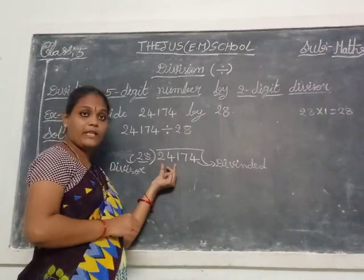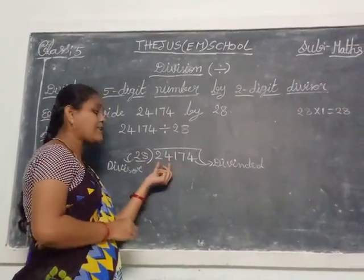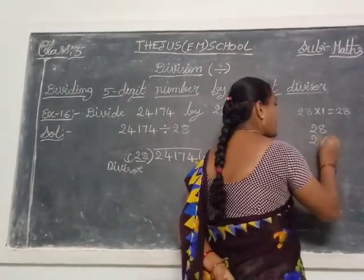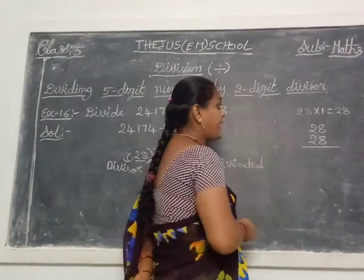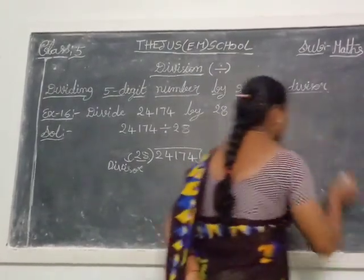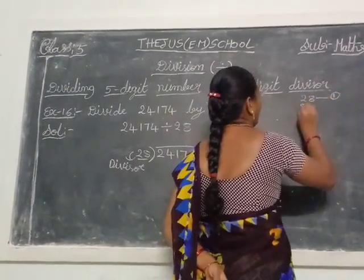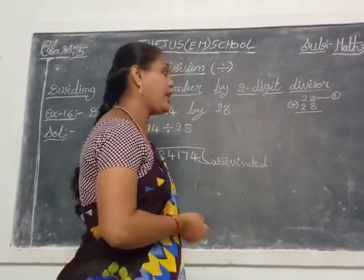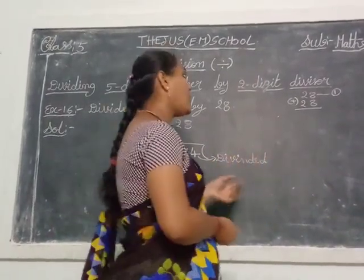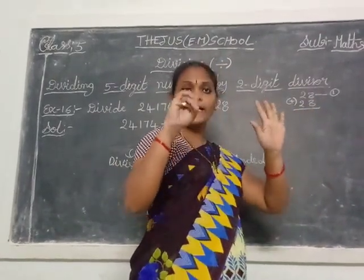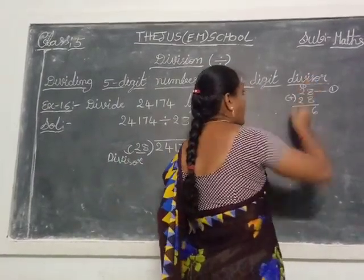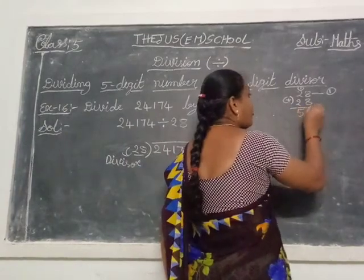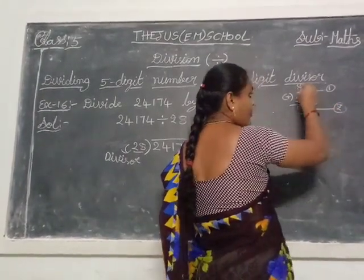Is 241 in the 28 table, or is there a nearest number below it? 28 ones are 28 — that is 1 time. Add another 28: 28 twos are 56. Add another 28: that is 3 times, 84. Continuously, addition is called multiplication, so we build the table this way.